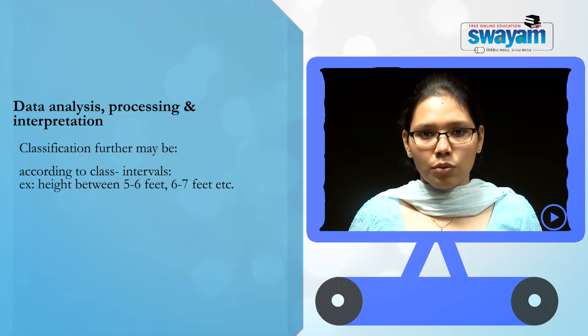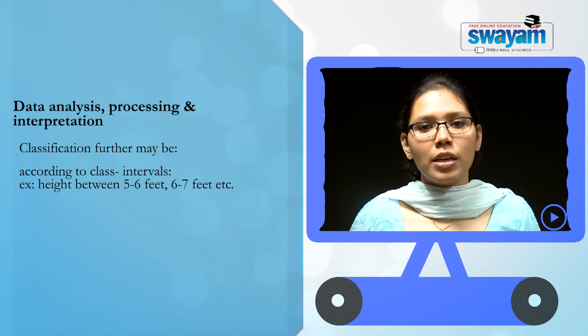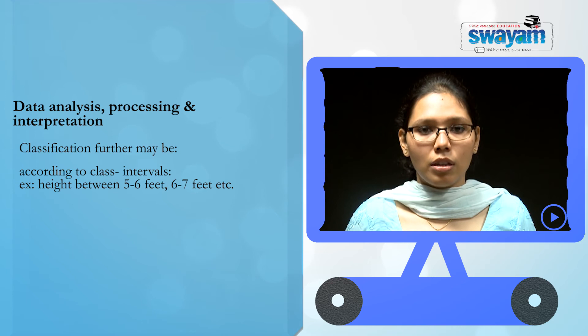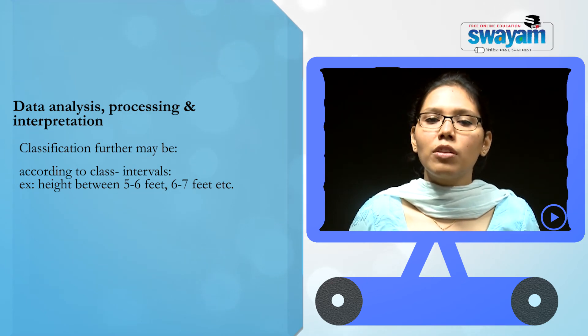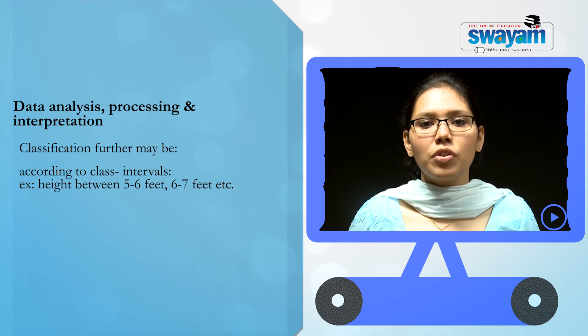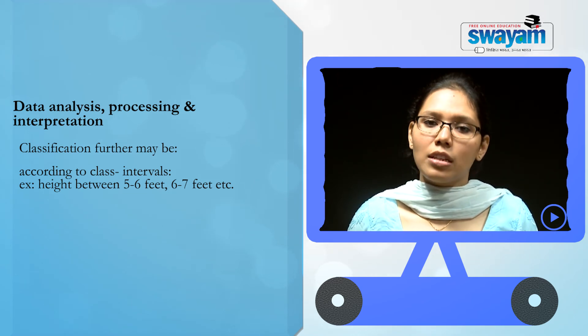Under class intervals, classification is based on numerical distinction, like the difference in height between 5 and 6 feet, the difference of height between 6 to 7 feet, etcetera.